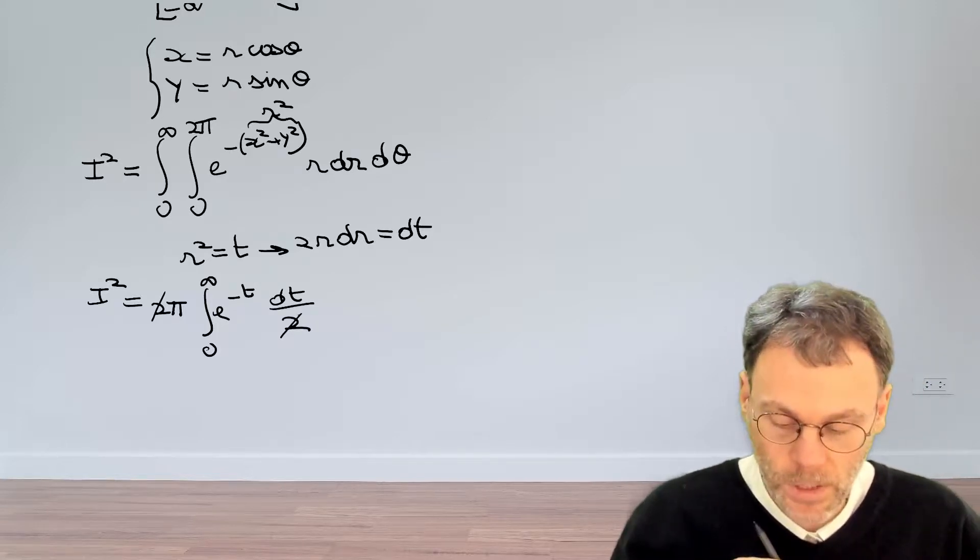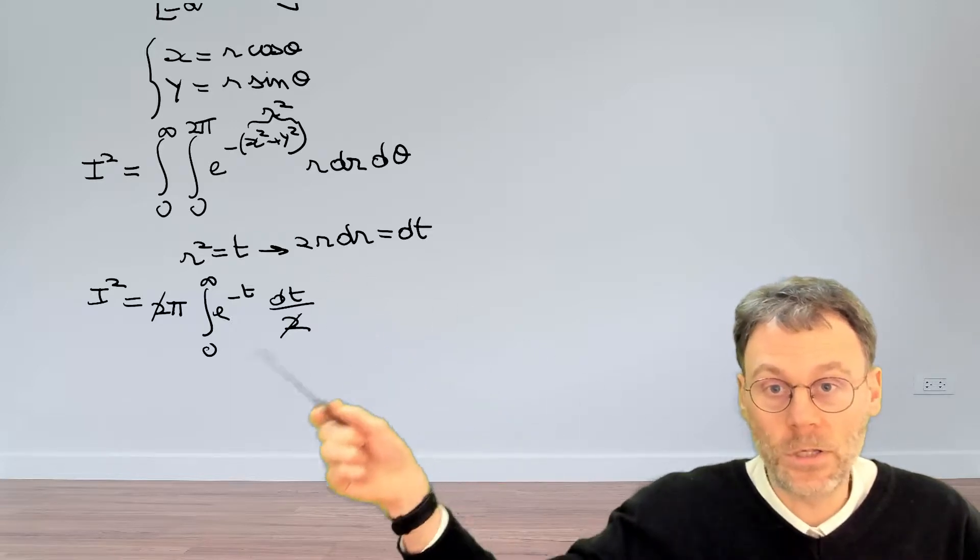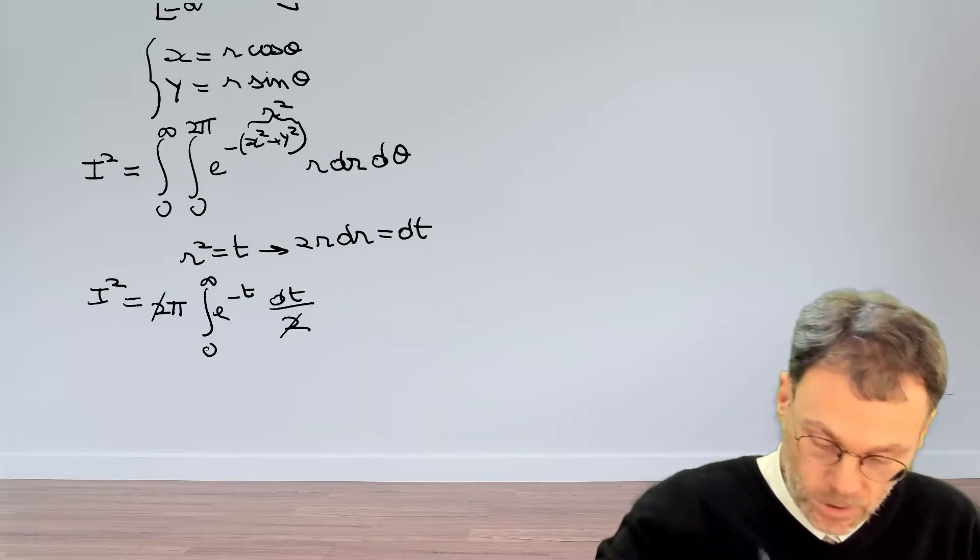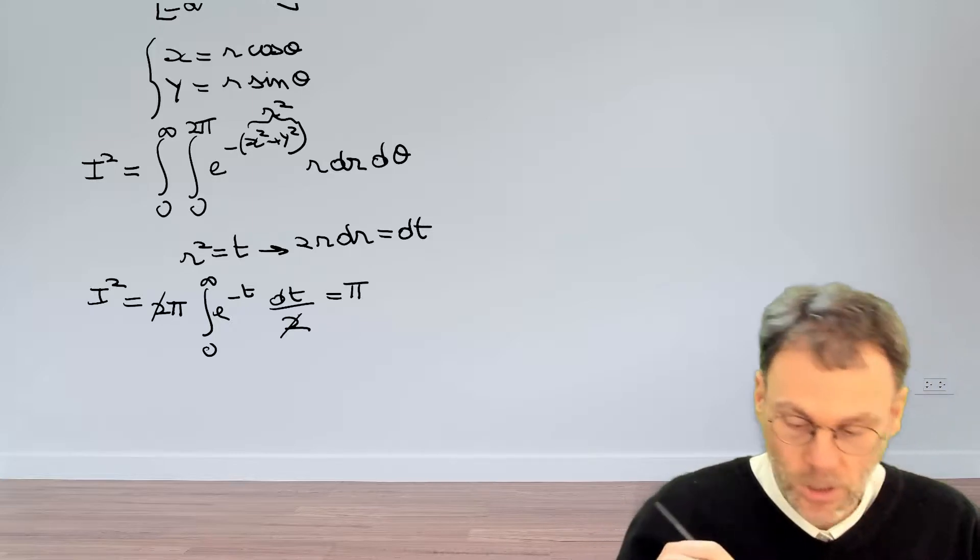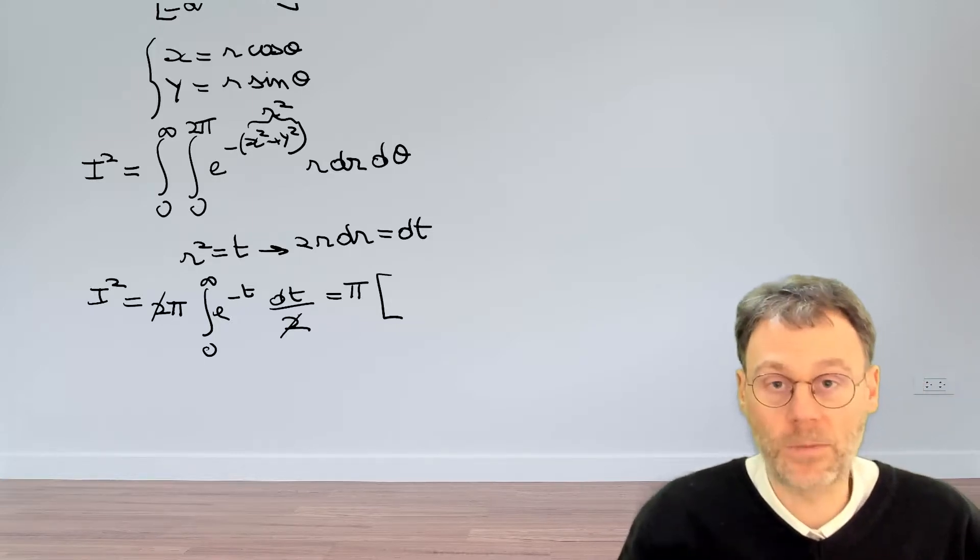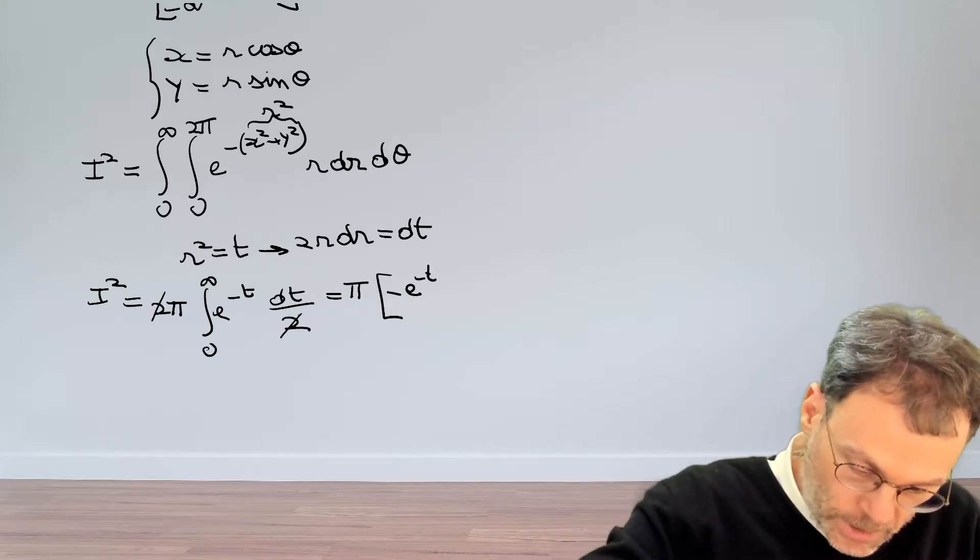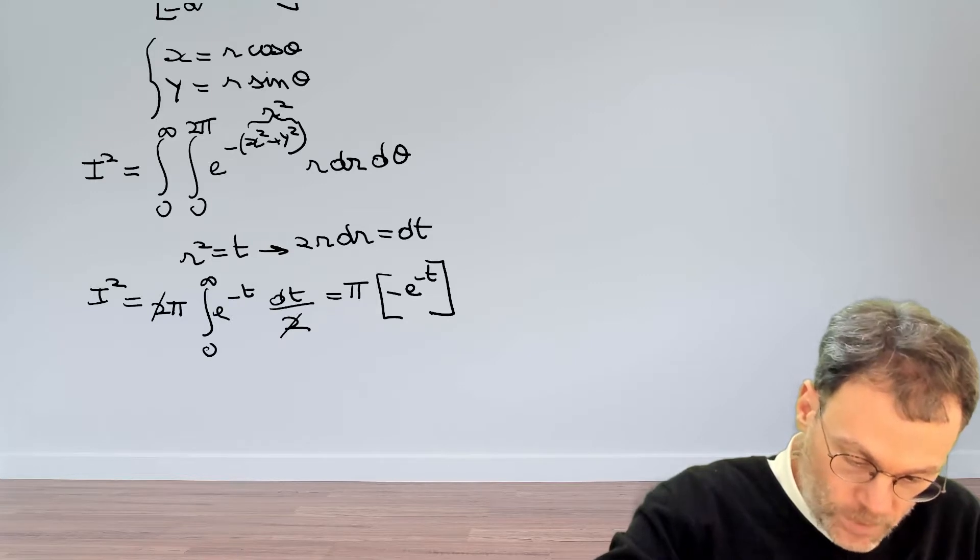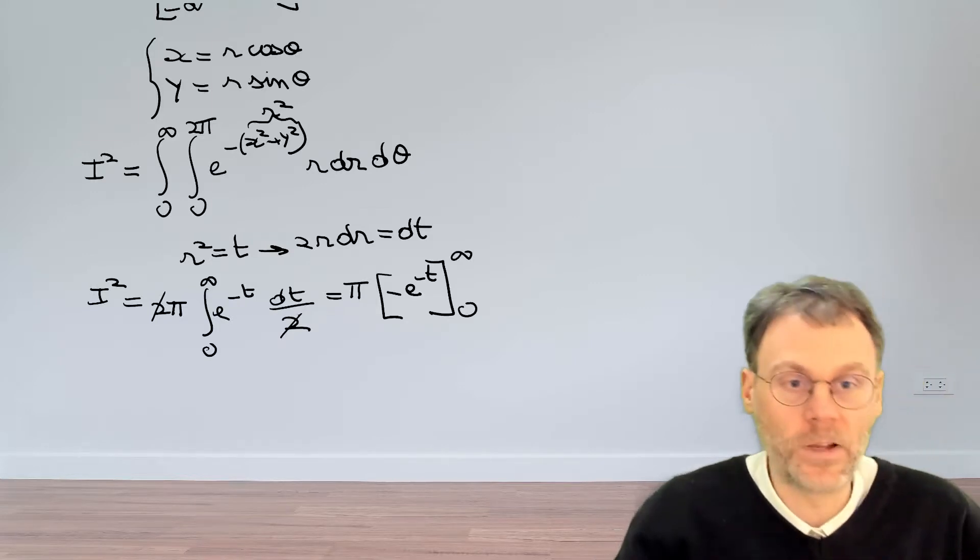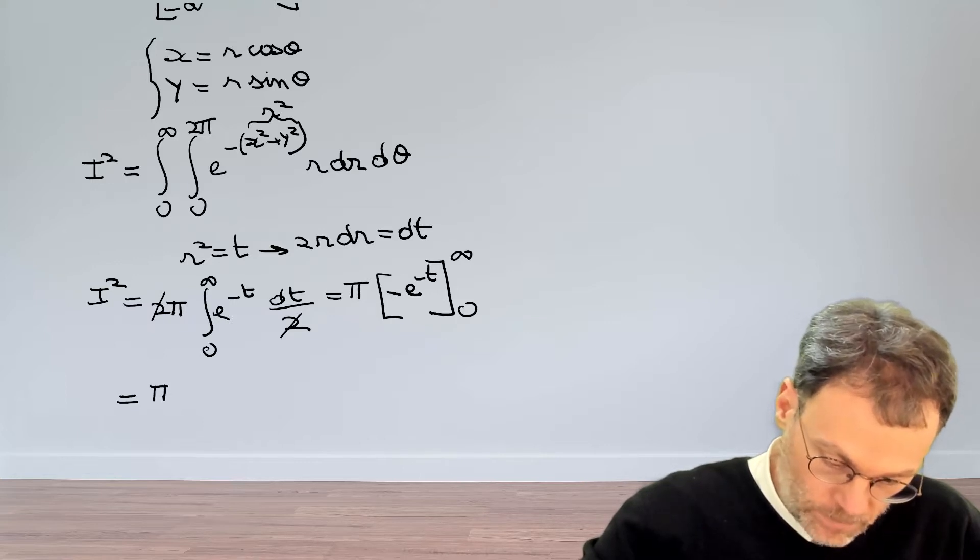So this is how we simplify things. And now we have a pretty straightforward integral that we can just solve on the spot here. So we'll have pi. And then the integral of exponential minus t becomes minus exponential minus t, which should be evaluated at infinity and at 0.